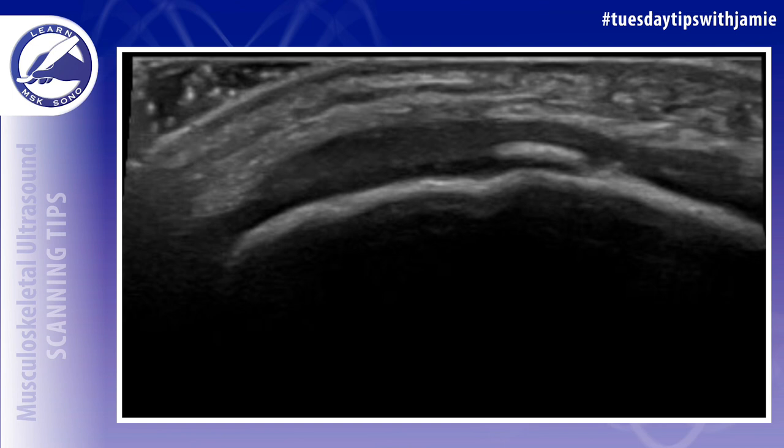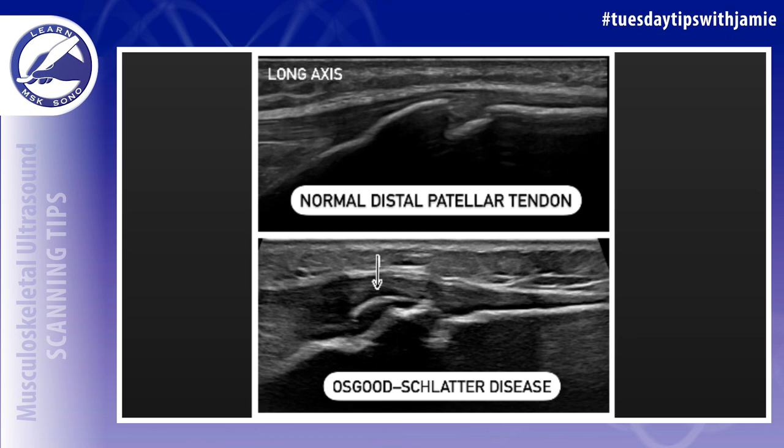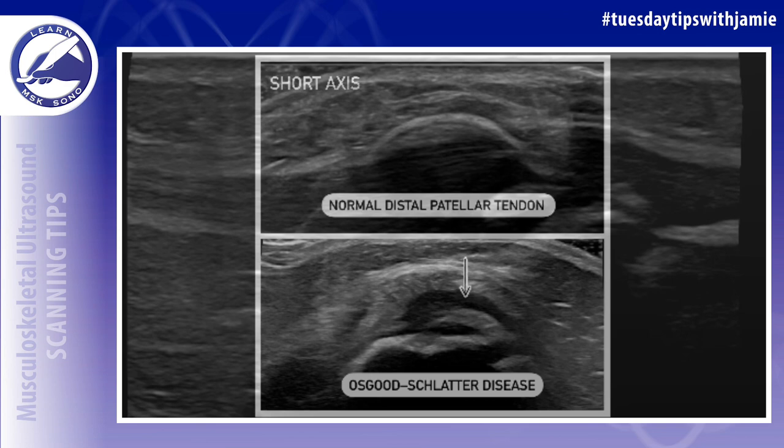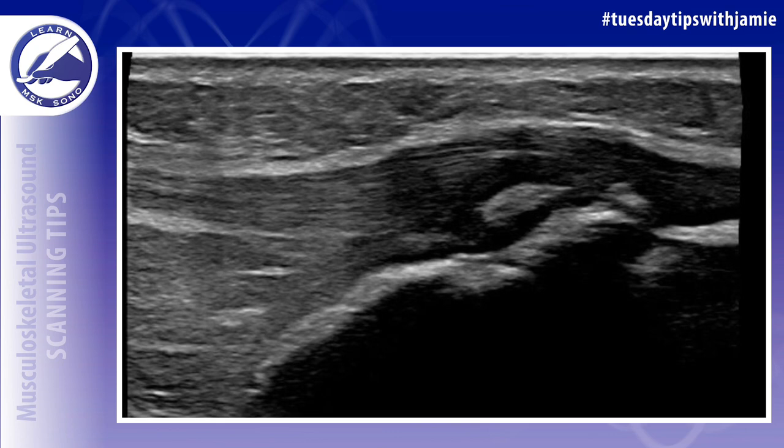Next, we have a side-by-side comparison of a normal distal patellar tendon compared to one with Osgood-Schlatter disease in the long and short axis. Osgood-Schlatter disease affects the anterior pole of the tibia at the distal end of the patellar tendon insertion.